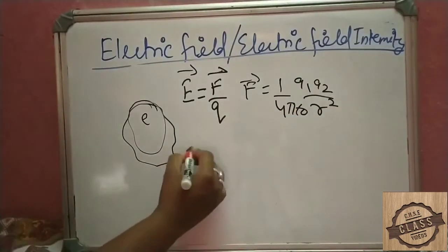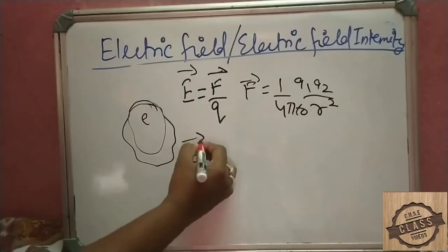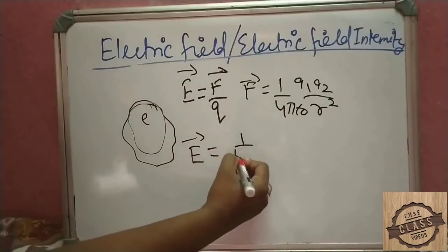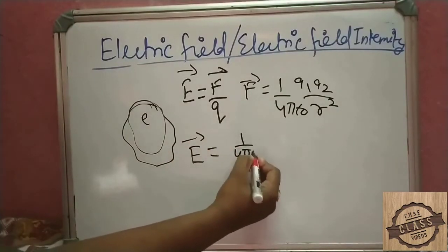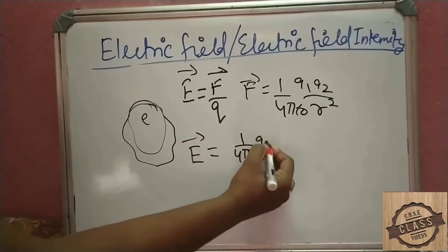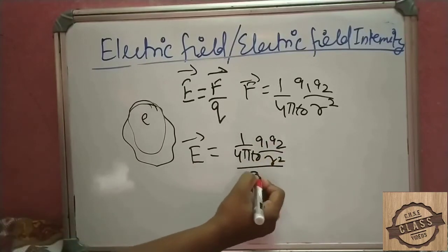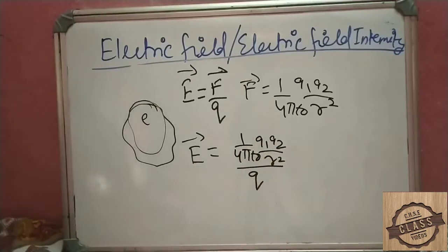Substituting into E = F/Q: E is equal to 1 over 4 pi epsilon naught, multiplied by Q1 Q2 divided by R squared, and then divided by Q.